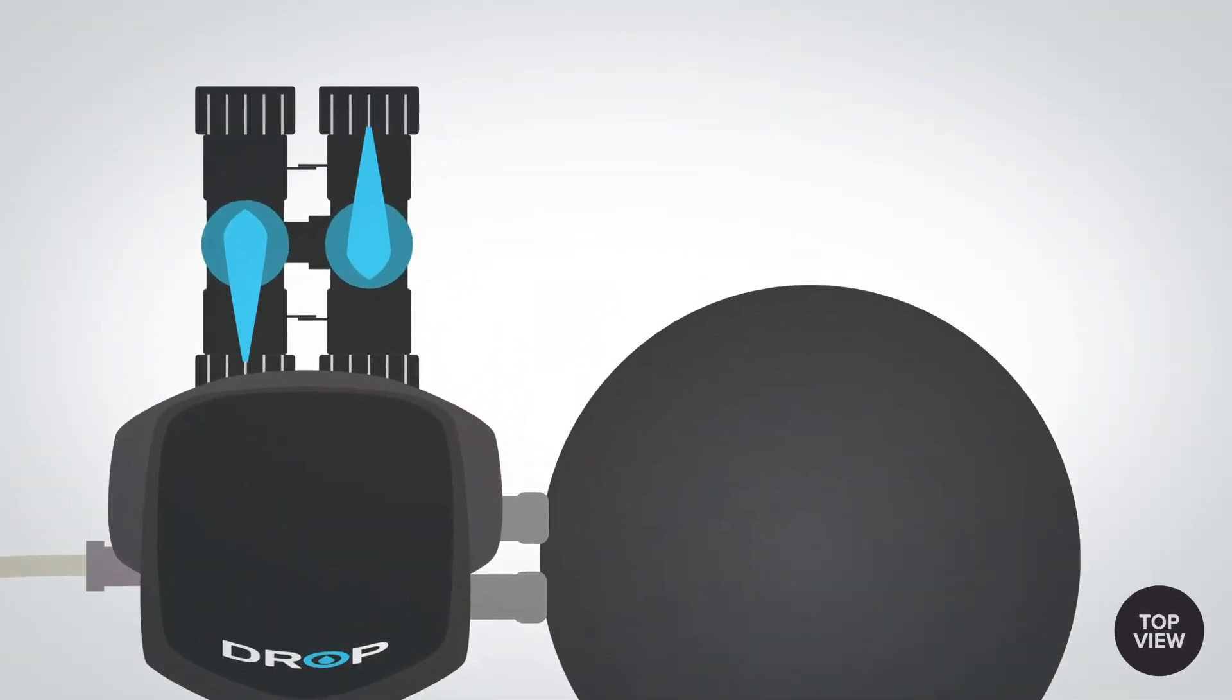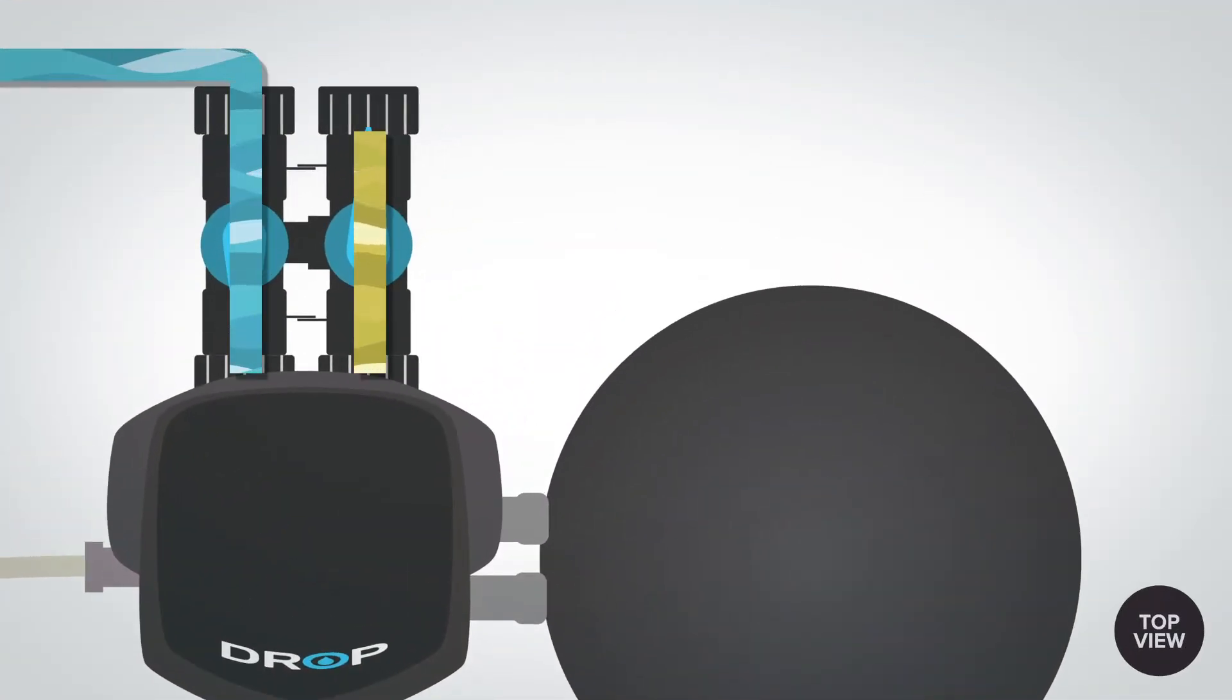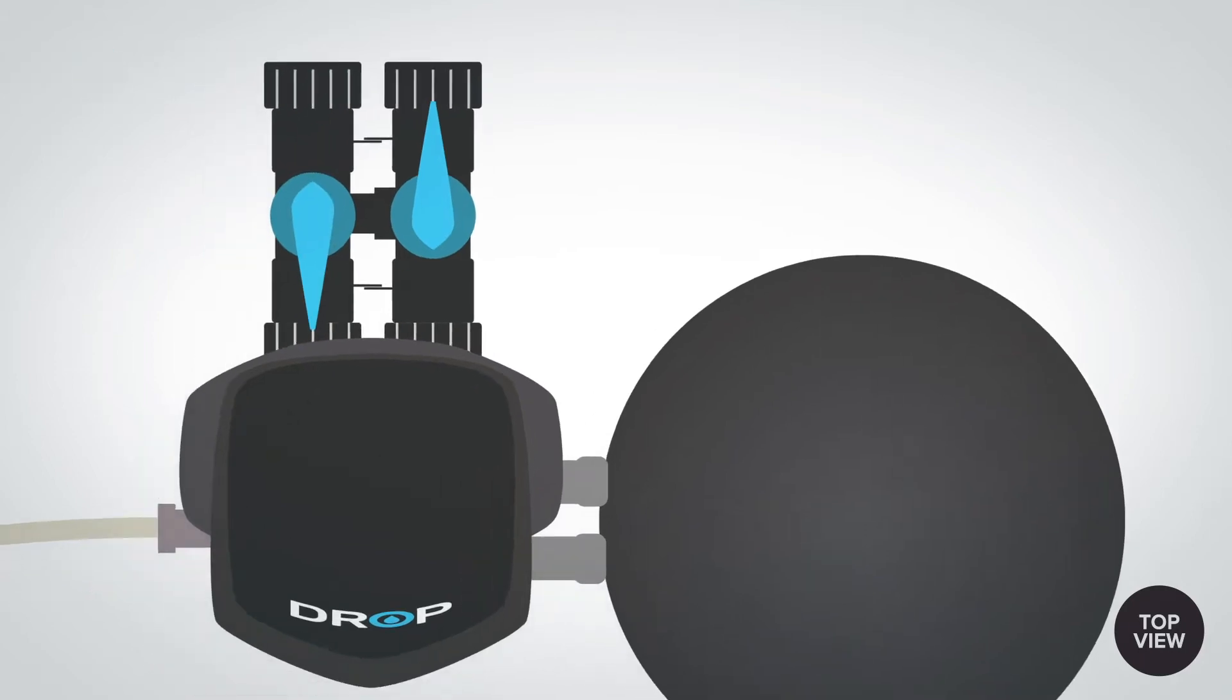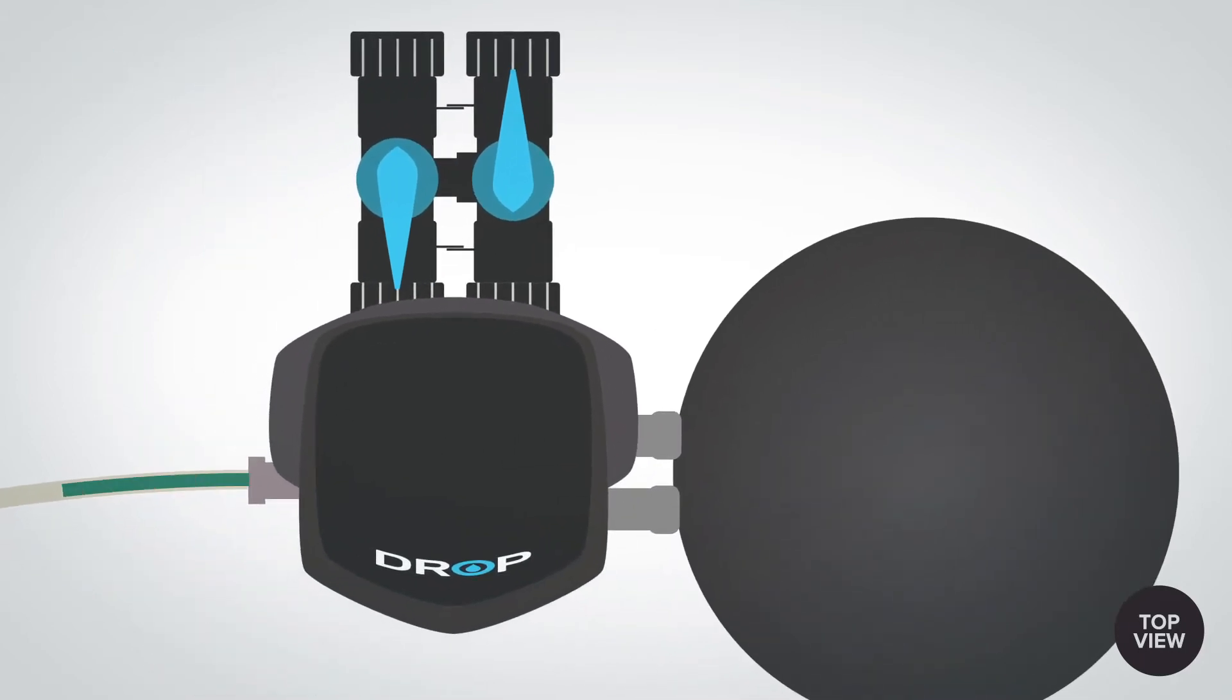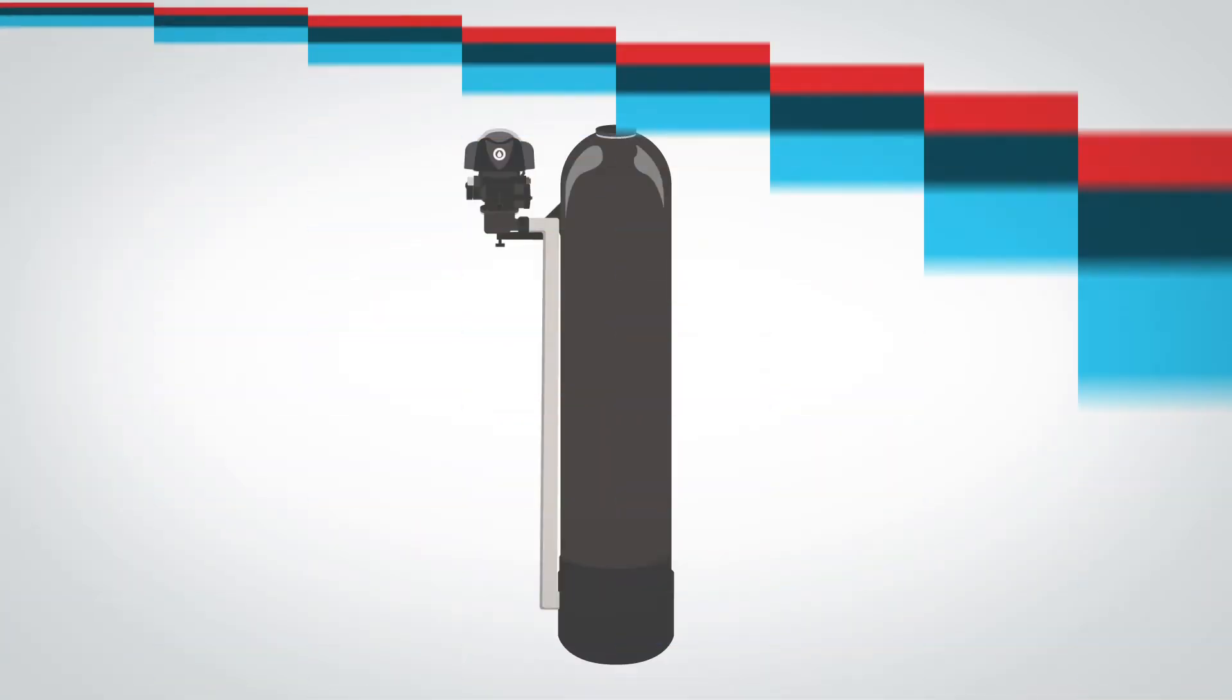Untreated water enters the inlet on the right-hand side of the control valve and treated water exits the outlet on the left. Contaminants are flushed from the system to a drain from the smaller outlet also on the left-hand side of the valve.